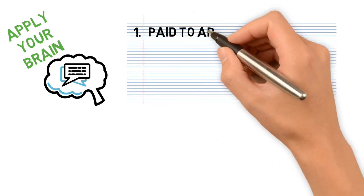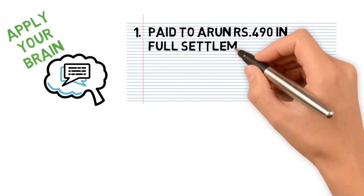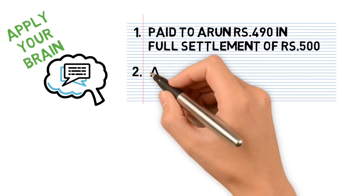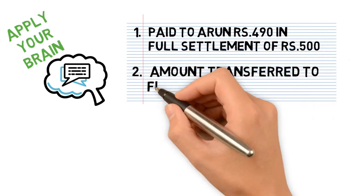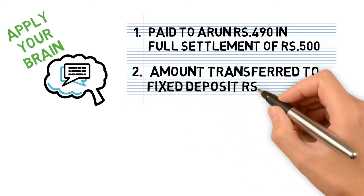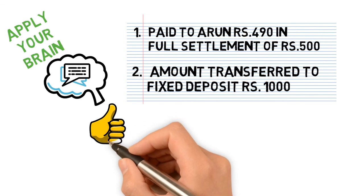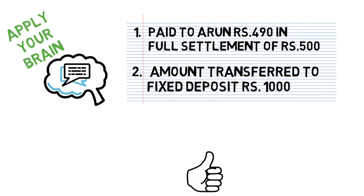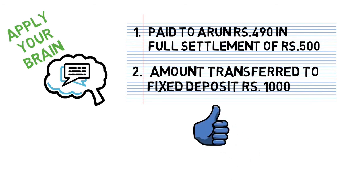Now we come to the 'Apply Your Brain' section with two practice transactions. First: paid to our own 490 rupees in full settlement of 500 rupees. Second: amount transferred to fixed deposit, 1,000 rupees. You can write the journal entries in the comment section or mail them to us. See you in the third lecture of this series — thank you so much, bye-bye.